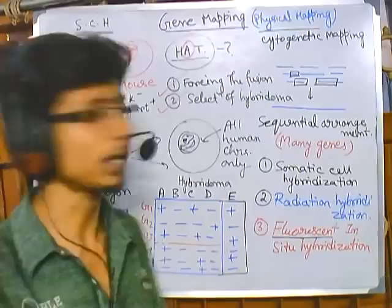By utilizing many cell lines and comparing the presence of these genes, we can determine the location of a gene on a particular chromosome. This is the process of physical mapping via somatic cell hybridization.